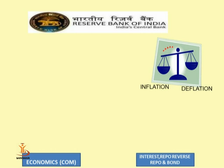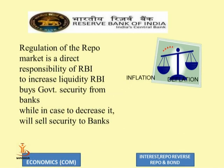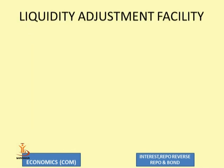We have one monetary authority — the main powering authority — that regulates the supply of money in the economy, and we call it the Reserve Bank of India. The repo market also comes under the purview of RBI. RBI regulates the repo market and it is a direct responsibility of RBI. Money supply is directly related to the liquidity position in the economy, and inflation and deflation are also somehow directly related to the liquidity position in the economy.